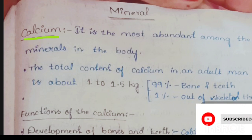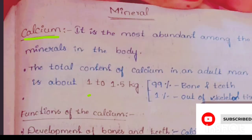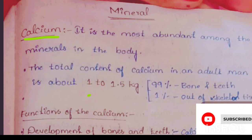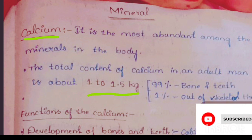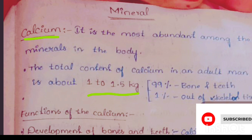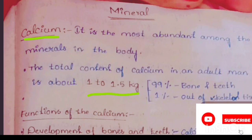Calcium is one of the most important and abundant minerals that we can find in our body. The total content of calcium in an adult man is about 1 to 1.5 kg. So if a person is weighing about 50 kg, then 1 to 1.5 kg of their weight comes from calcium.